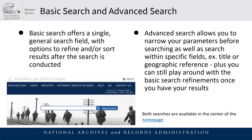Basic search and advanced search: whenever you go to catalog.archives.gov you'll get a background image from one of our holdings and in the center is a search bar. If you click on the magnifying glass that will conduct a basic search. The basic search offers a single general search field with options to refine the results after the search is conducted. Advanced search gives you many different parameters and fields to narrow your search before it is conducted.